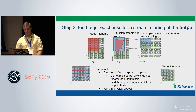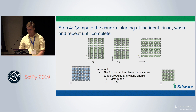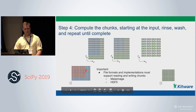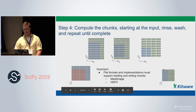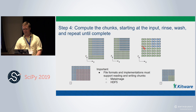Now we've figured out the chunks — which is the hardest part. Remember to work in physical space throughout. The last step is to compute the chunks: starting from the input, we go to the region we decided we need to compute on the reader, do the smoothing, then the resampling, and create one chunk in the output. Then we go back, find the next set of chunks, compute them, and iterate until we've completed our entire output image — correct and the same as if we weren't doing streaming.